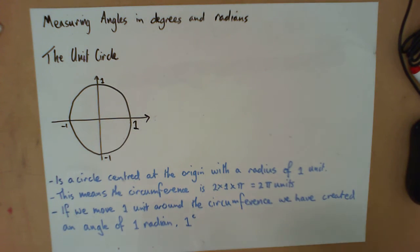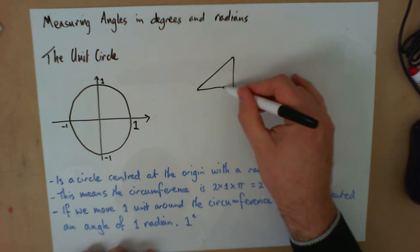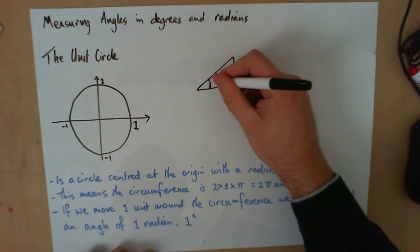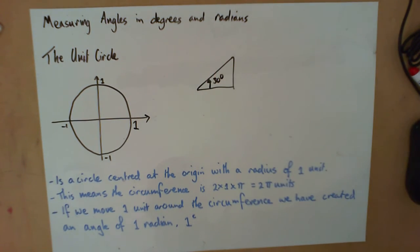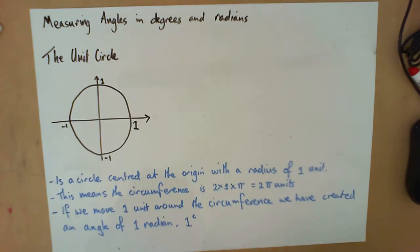In this video we're going to look at measuring angles in degrees and radians. For your entire schooling up to this point you've probably been measuring angles in degrees, like measuring that angle there as 30 degrees. But there's another unit for measuring angles called radians, and I'm going to talk about that now and how it all works.